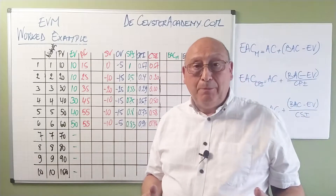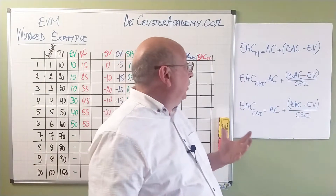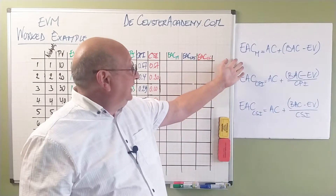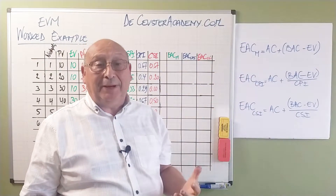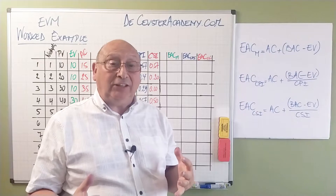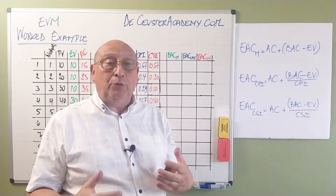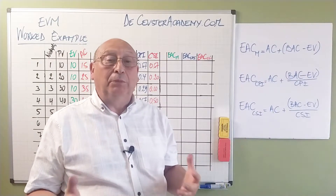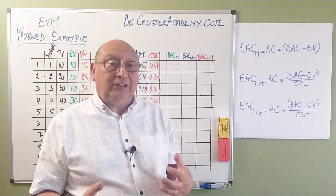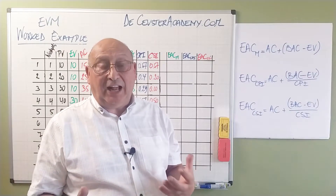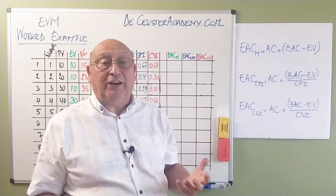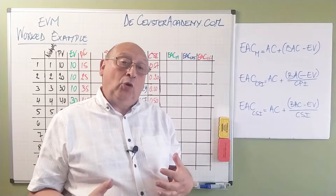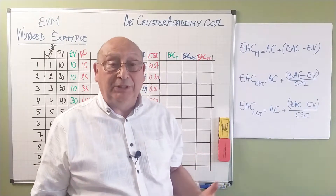Remembering from the previous presentations, we looked at those different elements and had different formulas. The mathematical estimate at completion is when we assume that we will continue the project as it was planned — from that moment on, we suppose that the remaining value of the deliverables we have to create is equal to the actual cost. That's what we called before the optimistic estimate.